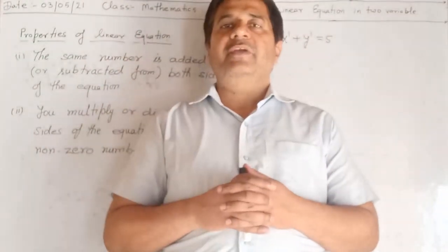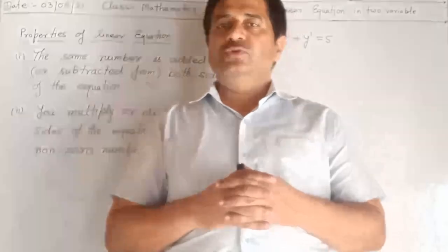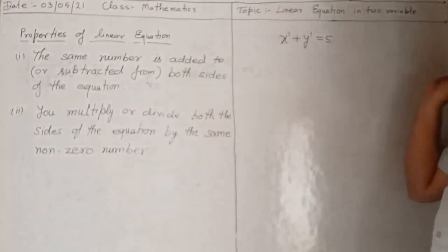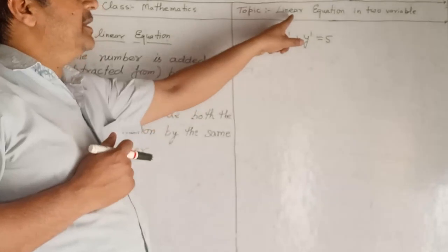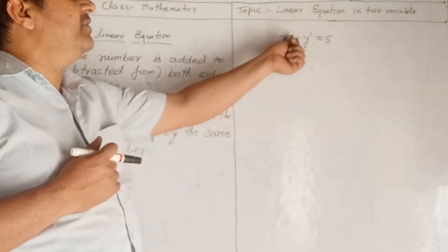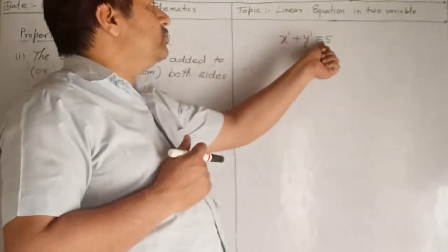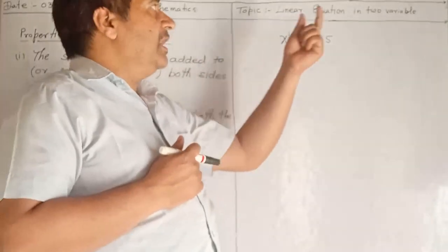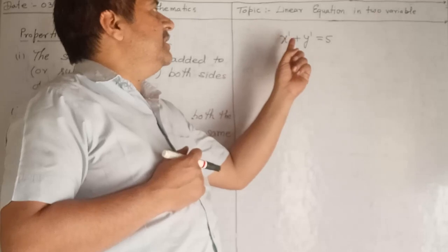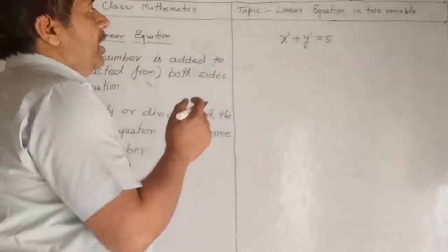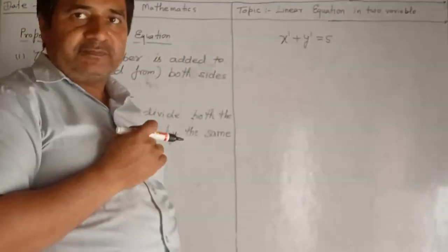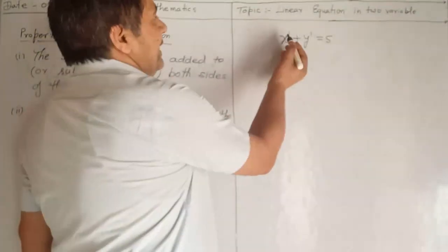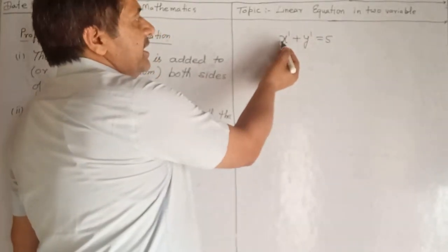Good morning students. Today I will teach you a new chapter: Linear Equation in Two Variables. This is your fourth chapter. Linear means an algebraic expression which has degree one. When we use an equal sign it is an equation, and when we use two variables it is a linear equation in two variables. Here x and y, two variables are used, and the degree of each is one.